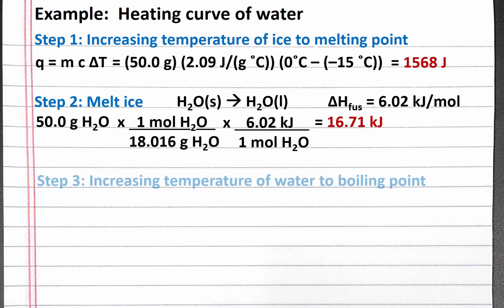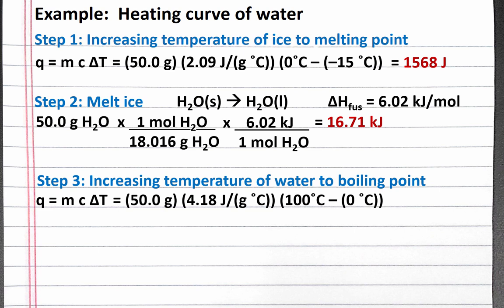Our third step is to increase the temperature of the water from 0 degrees Celsius, the melting point, to 100 degrees Celsius, the boiling point. We can use our equation heat equals mass times specific heat capacity times change in temperature. We still have 50 grams of water — melting the ice didn't change the mass. The specific heat capacity of water is 4.18 joules per gram degrees Celsius, and T final minus T initial is 100 minus 0 degrees Celsius. Completing the calculation, we get 20,900 joules.